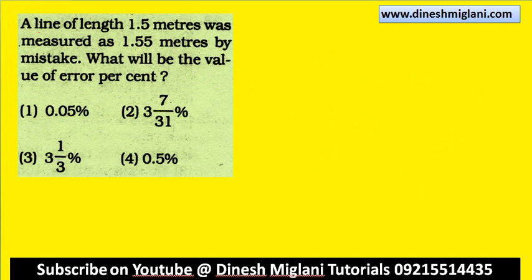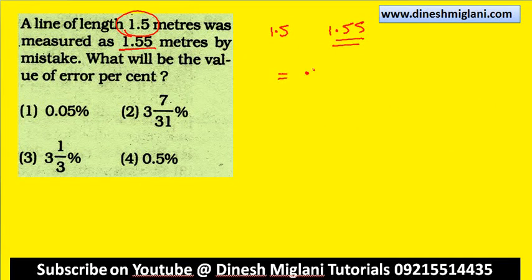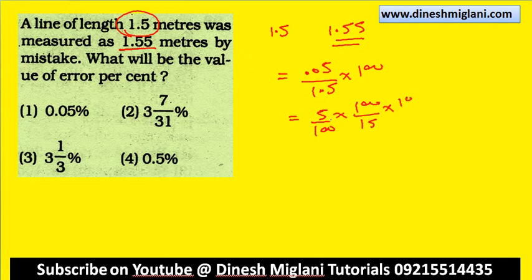A line of length 1.5 meter was measured as 1.55. What will be the percentage error? The error is 0.05, and it is on 1.5 into 100. So percentage error = 0.05 by 1.5 into 100 = 5 by 150 = 1/3%. Hence error percentage is 3 and 1/3% — third one is my answer.